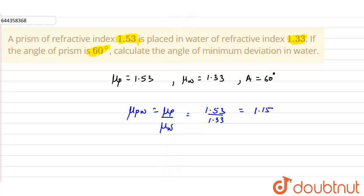Now the refractive index is related with the minimum deviation as: the refractive index of prism in water will be equals to sine of angle of prism plus the minimum deviation delta m divided by 2, whole divided by sine of angle of prism divided by 2.